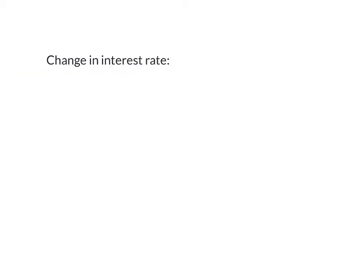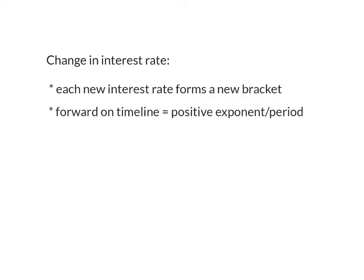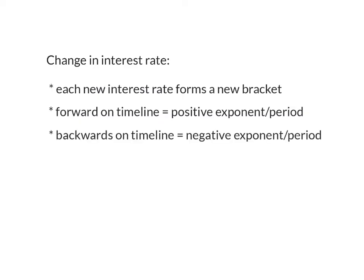Today we saw that when there is a change in interest rate, each new interest rate simply forms a new bracket that has to be multiplied to the previous value. When you move forward on your timeline, the exponent will always be positive. And when you move backwards on your timeline, the exponent is negative.